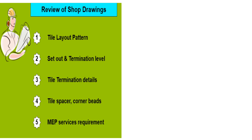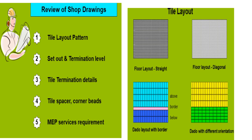Review of shop drawings. We have to review the layout pattern of the tiles on the shop drawings, including set-out and termination levels, tile termination details, tile spacer and corner beads, and MEP services requirements. For tile layout, if it is a straight floor layout it is shown here; if it is diagonal it is shown here. Dado layout without a border is also shown, as well as dado with a different orientation. This gives a rough idea of how the tile layout has been done in the dados.